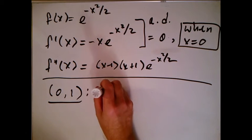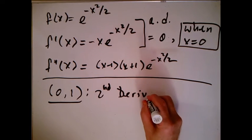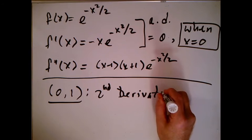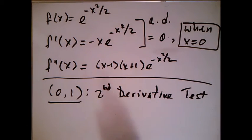Let's just put second derivative test. It just says take that critical value, which is just zero, and put it into the second derivative.